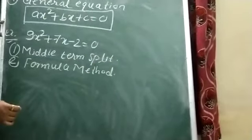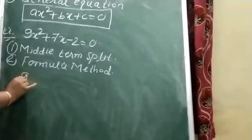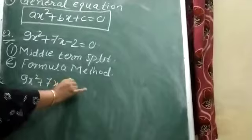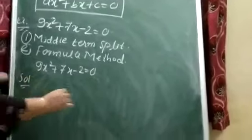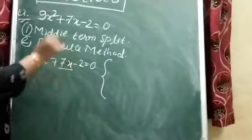I am solving this example by using middle term split method. 9x² + 7x - 2 = 0. First of all, the concept: how we have to split the middle term. Here, the middle term is 7x.